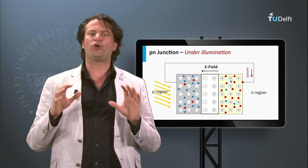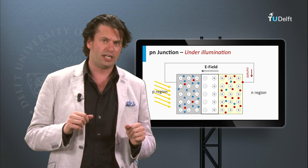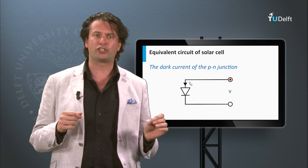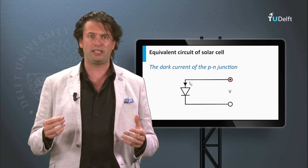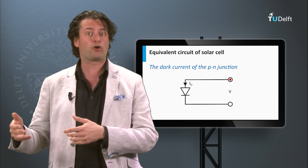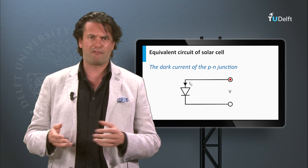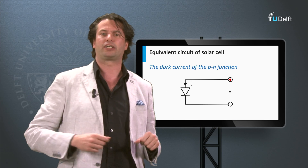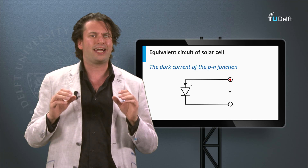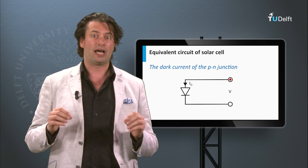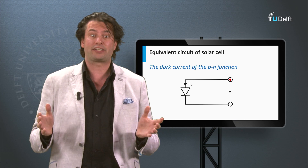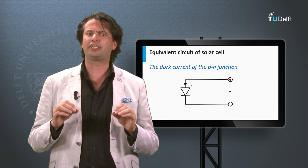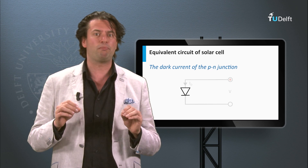Now we are going to construct an equivalent circuit in which we can describe the behavior of a P-N junction solar cell. We have discussed that in the dark a P-N junction behaves like a diode — an electrical element that becomes conductive in one direction under forward bias, whereas under reverse bias it hardly conducts and blocks the current in the opposite direction. P-N diodes are used in many electrical circuits, and their main function is to allow current in one direction and block it in the other. A P-N junction is represented by the electrical symbol shown here.